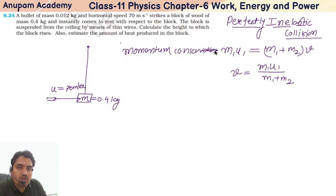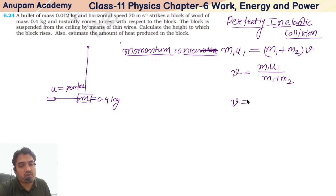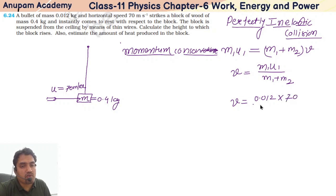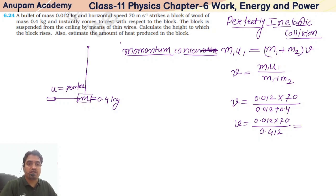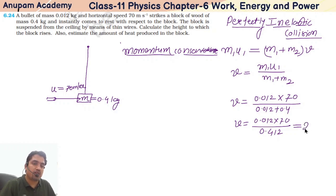We use momentum conservation because in the case of collision, we always use momentum conservation. So V = M1 × U1 / (M1 + M2). M1 = 0.012, U1 = 70, so V = (0.012 × 70) / (0.012 + 0.4) = 0.012 × 70 / 0.412. Solving this, velocity comes out to approximately 2.04 m/s.